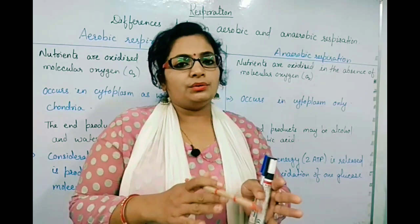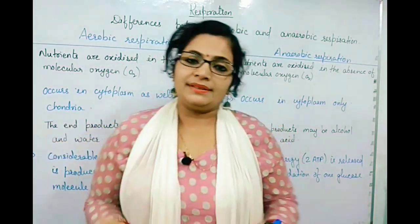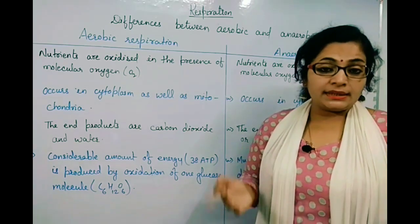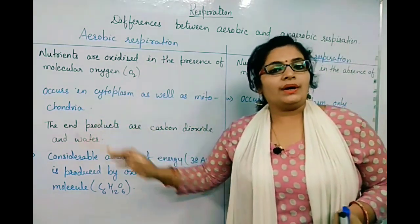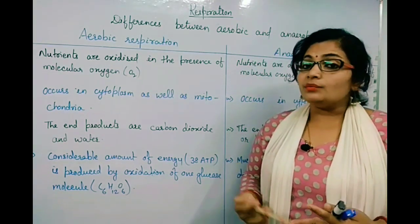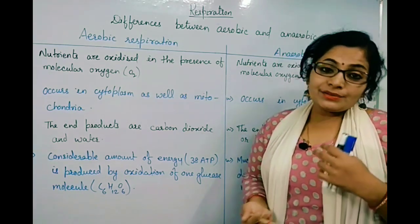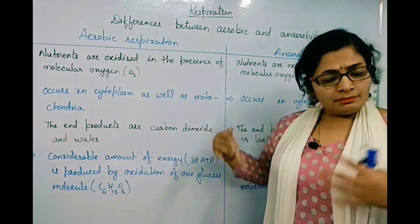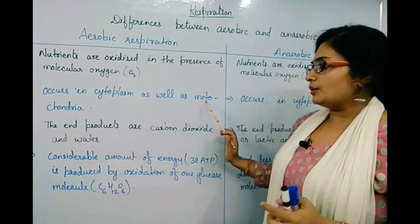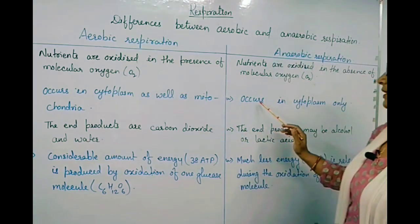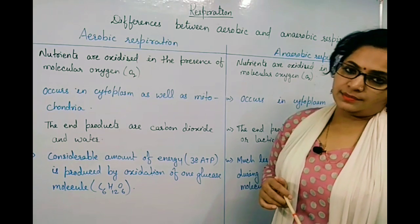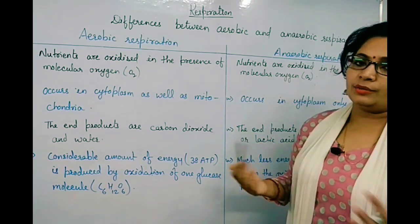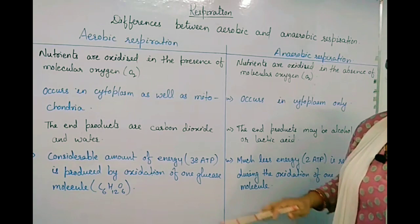Now for the differences between aerobic and anaerobic respiration: aerobic respiration occurs in the cytoplasm as well as in the mitochondria. Mitochondria is the cell organelle regarded as the powerhouse of the cell because ATP is produced there. But anaerobic respiration occurs only in the cytoplasm, since there is no role of mitochondria in it.